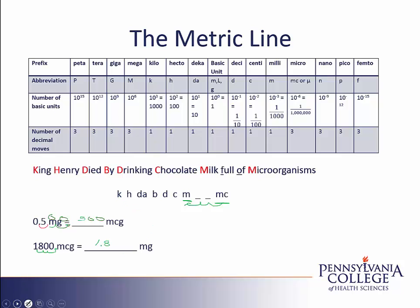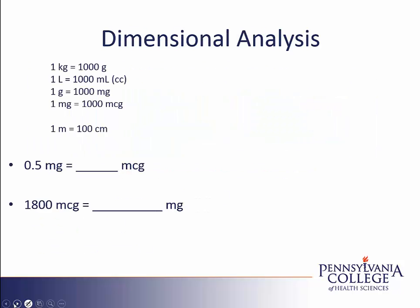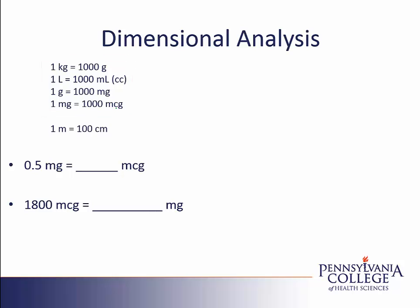Our second approach to metric conversions is to use dimensional analysis. In dimensional analysis, our most common conversions are all 1,000: a kilogram is 1,000 grams; a liter is 1,000 milliliters; a gram is 1,000 milligrams; a milligram is 1,000 micrograms. The one exception is length — we typically use either the meter or the centimeter, related by a factor of 1 meter equals 100 centimeters.